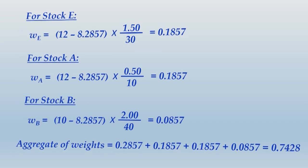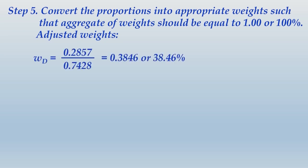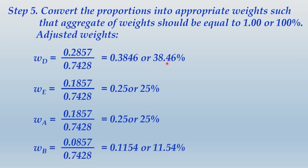Step 5 is the last step: convert the proportions into appropriate weights such that the aggregate of weights equals 1 or 100%. The adjusted weight for each stock = proportion of that stock divided by the aggregate of all proportions (0.7428). For example, stock D's proportion was 0.2857, divided by 0.7428, giving an adjusted weight of 0.3846, or 38.46%. Likewise, weights are calculated for stocks E, A, and B, and their total will equal 1.